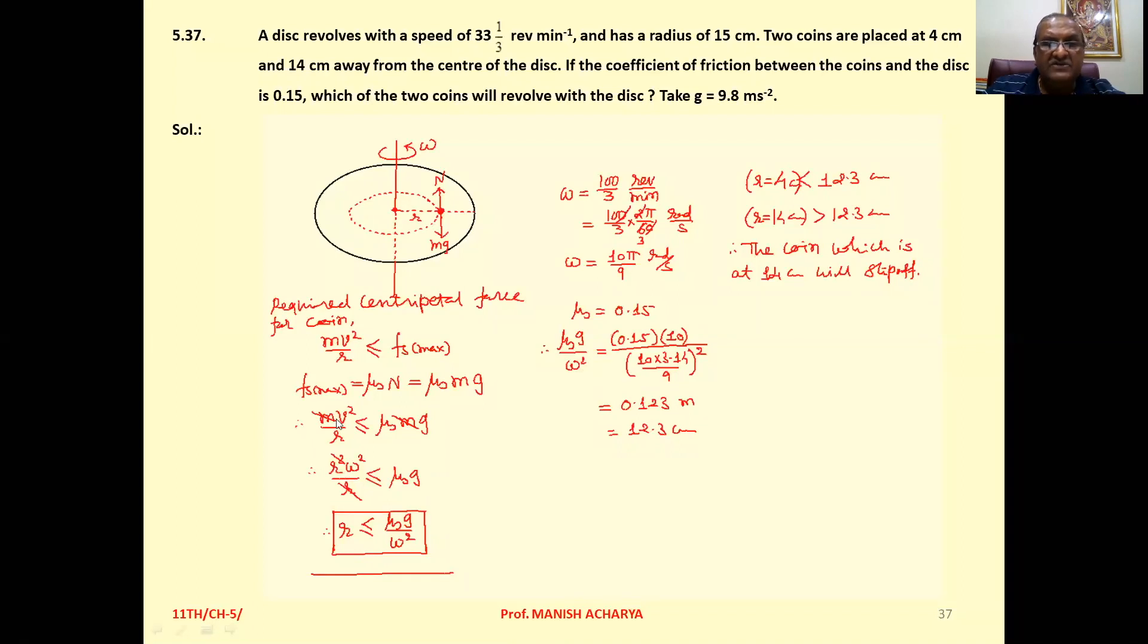So here v², that is r²ω² upon r as it is, less than or equal to μₛ times g. Again, one r cancelled here. And now take this ω² on right hand side. So we can write here, r that should be less than or equal to μₛ times g upon ω².